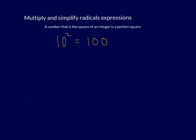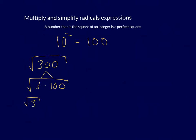Let's take a look at how we would actually simplify radical expressions. Let's say I had the square root of 300. What you do to simplify square roots is look for perfect squares as factors. We know that 100 is a perfect square, so I could rewrite this as 3 times 100. That gives us the square root of 3 times the square root of 100. Since 100 is a perfect square, we get the square root of 3 times 10, so the final answer is 10 times the square root of 3.